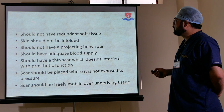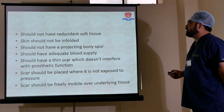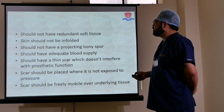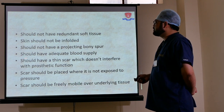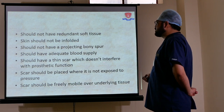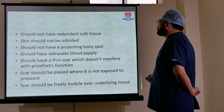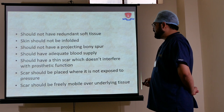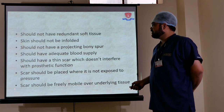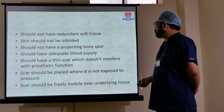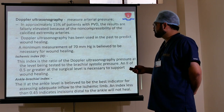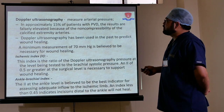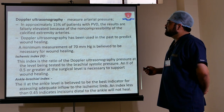The stump should not have redundant soft tissue, should not have a projecting bone spur, should have adequate blood supply, a thin scar that does not interfere with prosthetic function, and the scar should be placed where it is not exposed to pressure and should be fairly mobile over the underlying tissue.